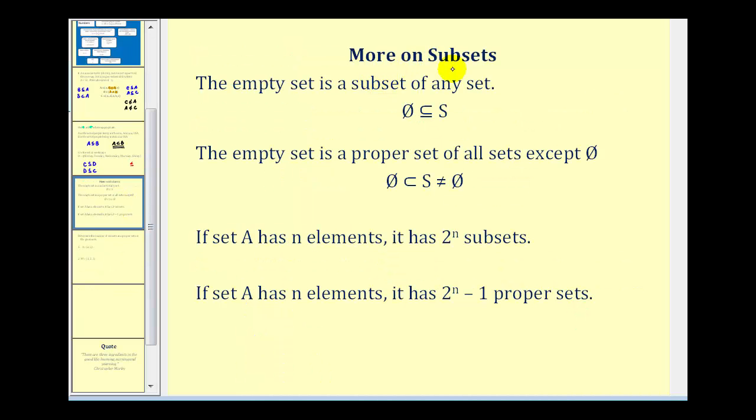A few more minor things to mention about subsets. The empty set is a subset of any set. And the empty set is a proper set for all sets except for itself, the empty set. From these two statements, it follows that if set A has n elements, it has 2 to the nth power subsets. And if set A has n elements, it has 2 to the n minus 1 proper subsets. Notice the minus 1 because we can't count A as its own subset.